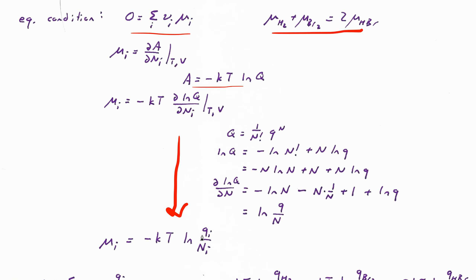Just to remind you where that comes from: if we have a bunch of independent, identical, and indistinguishable molecules, the partition function of those n molecules is (1/n!) times the single-molecule partition function raised to the nth power, because of the indistinguishability. The log of that full system partition function is negative log(n!), plus n times the log of the single-molecule partition function — that is, n log q.